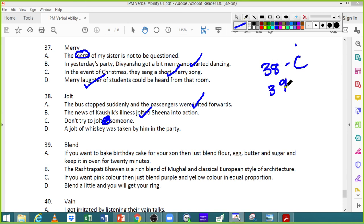To blend means to mix. If you want to bake a birthday cake for your son, then just blend flour, egg, butter, and sugar. This is also right. The Rashtrapati Bhavan is a rich blend of Mughal and classical European style. This is also right. If you want pink color, then just blend purple and yellow in equal proportions. Logically wrong, but grammatically correct. Blend a little and you will get your ring. This sentence doesn't make any sense. So 39th, definitely D. In 38th, a jolt of whiskey was taken by him in the party. Jolt of whiskey. Splash of whiskey, peg of whiskey. In slang, a jolt of whiskey. Peg is not the only word to describe a drink. You can also have a splash. You can have a jolt of something. So 39th, D definitely does not make any sense.